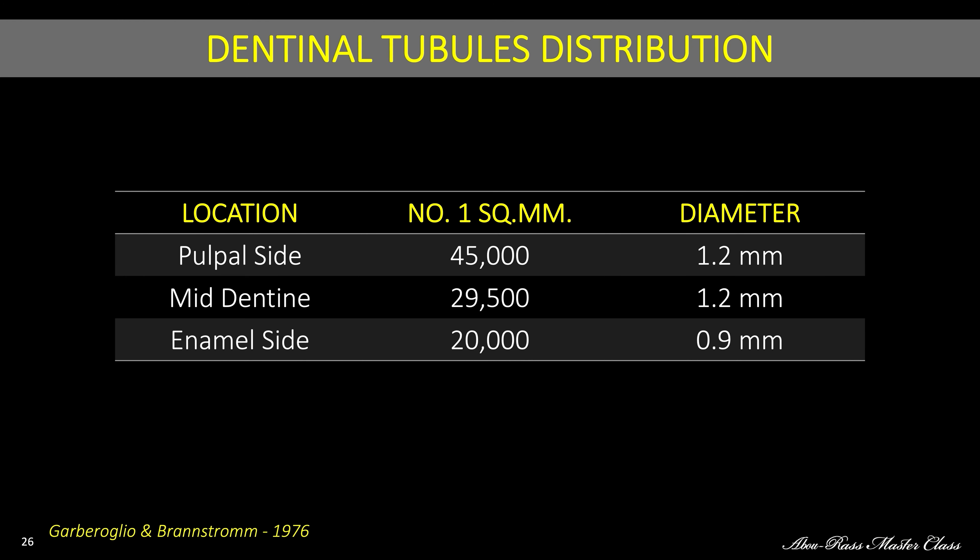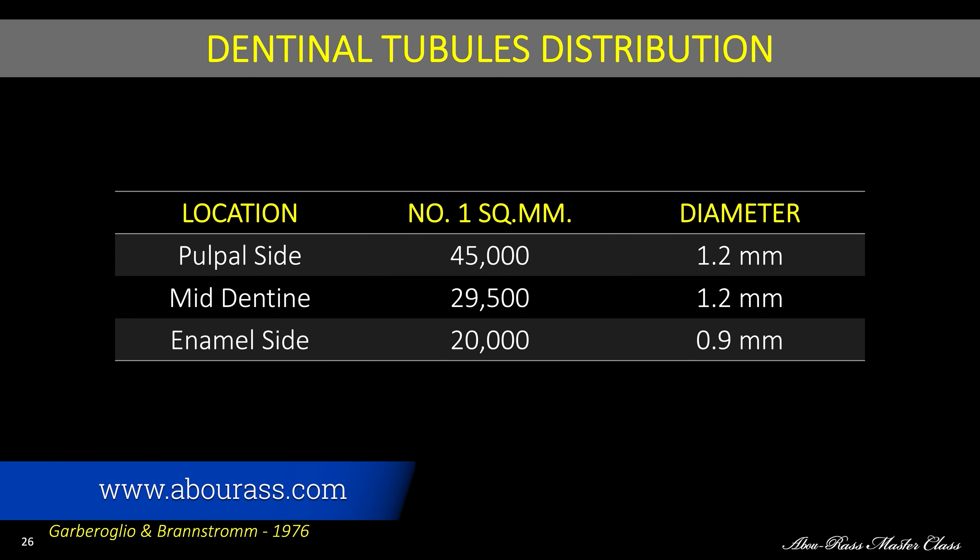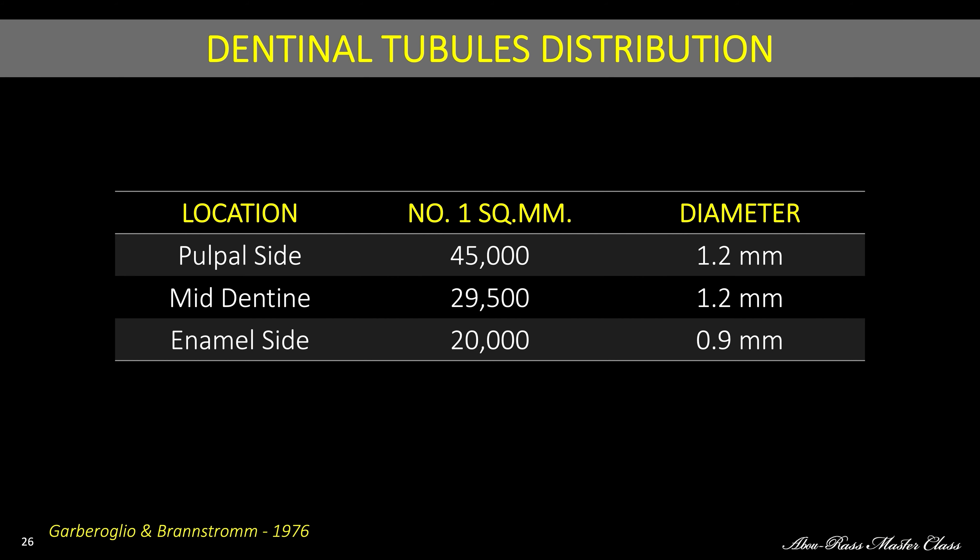The saturation of the dentinal tubules is significant. At the pulp side, you have about 45,000 tubules; at mid-dentin, about 30,000; and at the enamel side, about 20,000. That means as we go deeper in the cavity preparation or in the carious lesion, we are coming to a more organic, more permeable area closer to the pulp.